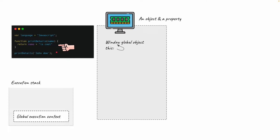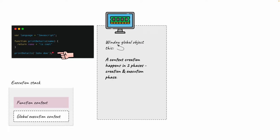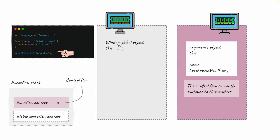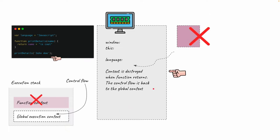Coming to line 3 — the moment we invoke a function, a new function context is created on top of the global execution context. Whenever a context is created, it goes through two phases: a creation phase and an execution phase. In a function context, we have an arguments object instead of a global window object. The control flow switches to this context, the function executes, and once done, the context is destroyed and control jumps back to the global execution context.